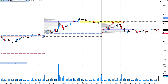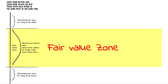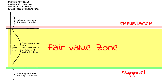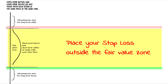An important aspect of the volume profile trading concept is understanding the boundaries of the fair value zone. These boundaries often act as support and resistance levels. Unlike the levels given by technical indicators, these levels represent the real interest of the participants, confirmed by the trading volume — this point is very important to understand.